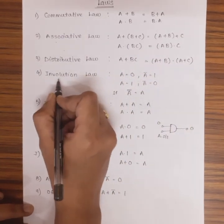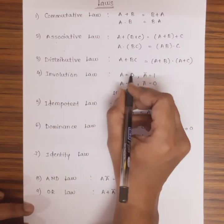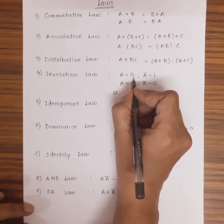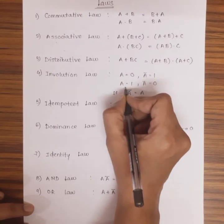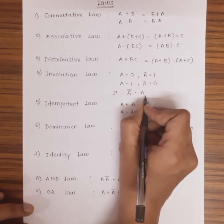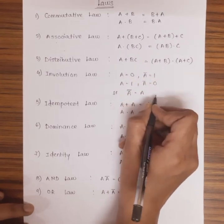Next comes involution law. On application of involution law, input just gets inverted. If input is 0, the output is 1. If input is 1, then output is 0. On application of double inversion, the original input can be produced as the output.